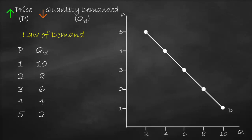I'd like you to be able to differentiate between quantity demanded and the demand curve. Quantity demanded is a certain quantity at a certain price. For example, at a price of 2, our quantity demanded is 8 — that value of 8 is called quantity demanded. From the graph, at price 2 it gives us quantity demanded of 8. Therefore, any single point on the demand curve is called quantity demanded.